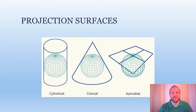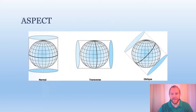Each one of these projections is useful depending on the type of map that is being made. The aspect of the projection refers to the placement of the projection surface relative to the earth. A normal aspect is in line with the earth's axis.